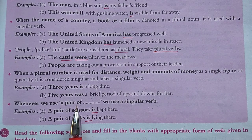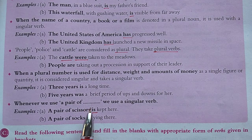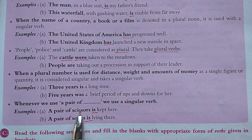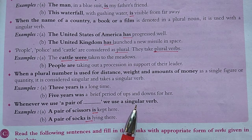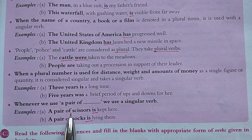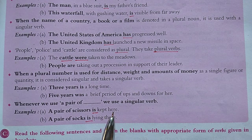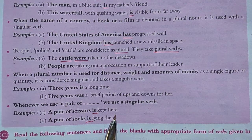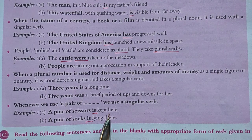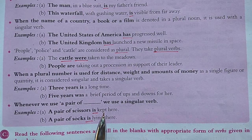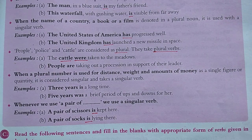Whenever we use 'a pair of,' we always use a singular verb. For example, 'A pair of scissors is...' and 'A pair of socks is...' — these take singular verbs. These are a few important rules I have explained. I hope you have understood — please read the chapter and solve all the exercises. Thank you.